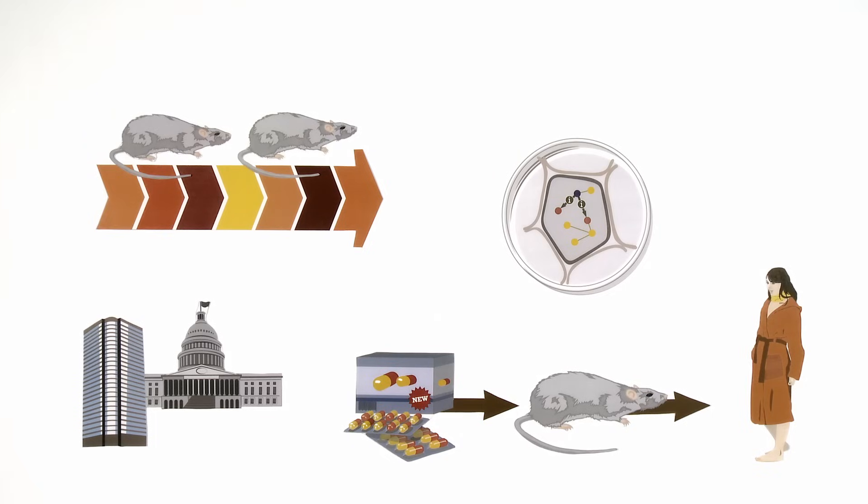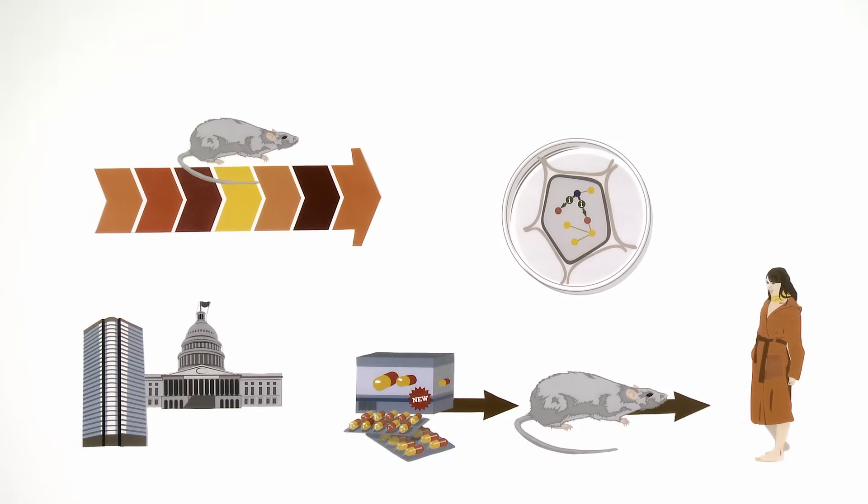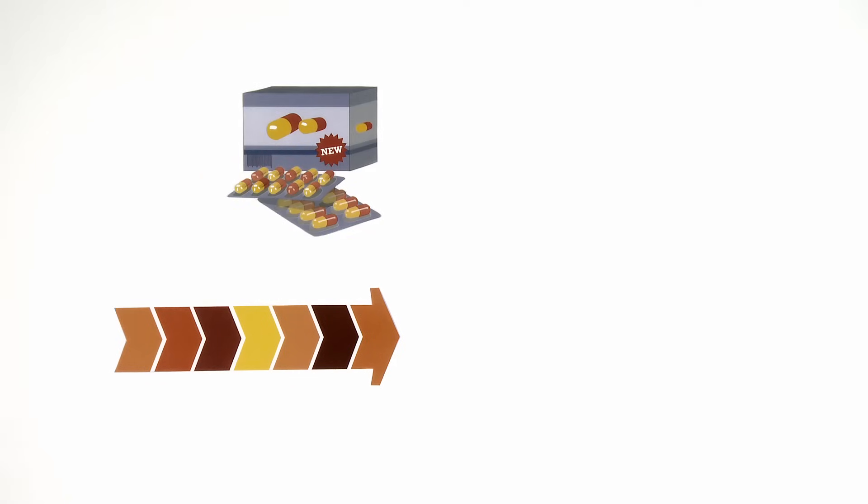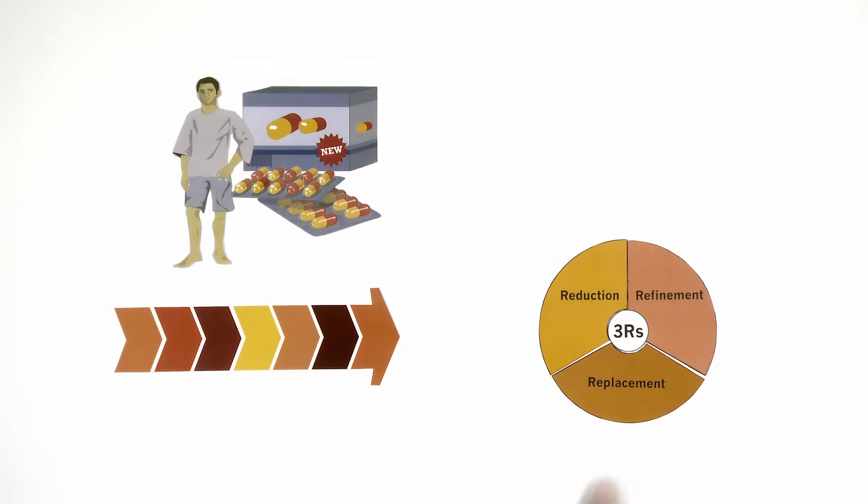Novartis keeps this research as limited as possible and always ensures that animal research is scientifically acceptable according to current standards and regulations. For these reasons, Novartis continues to use animals in its quest to find innovative, safe, and life-saving medicines for patients. At the same time, Novartis is committed to refining, reducing, and replacing the use of animals in research and upholding the highest standards in animal welfare.